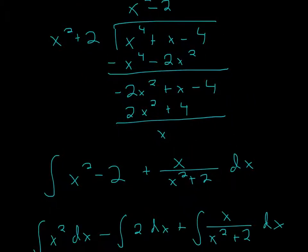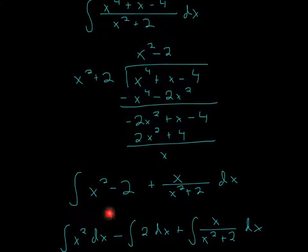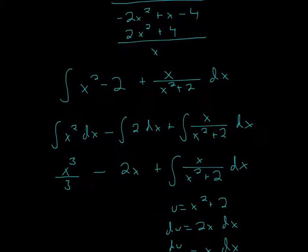So your actual new integral will be x squared minus 2, right, the actual answer, and your remainder x over your denominator x squared plus 2. Now with all this, we can actually integrate this.